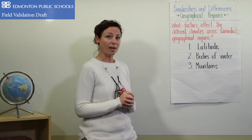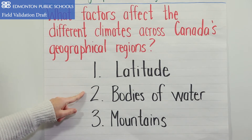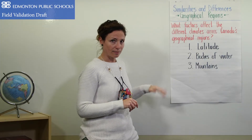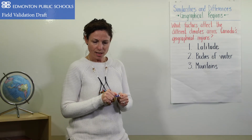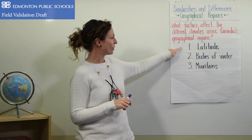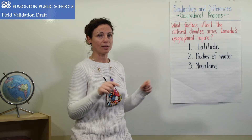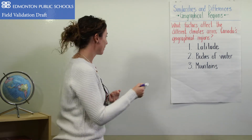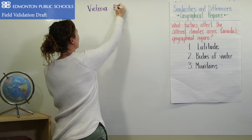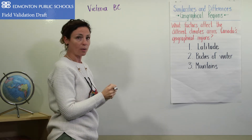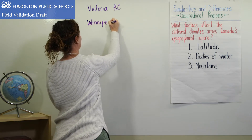There are three factors that impact climate. We've already looked at latitude, and today we're going to look at bodies of water. To do that, I need to do some drawing on the board. I'm going to use my cheat sheets here to help me out. What I did first was try to find two cities that are fairly similar in their latitude. So I picked the cities of Victoria, BC and Winnipeg, Manitoba.